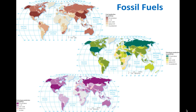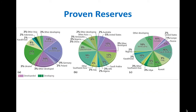Here are our fossil fuels and you can see their use around the globe. A few countries obviously stand out: the United States, Russia, Canada, and China are among the higher ones. Here are the proven reserves — the ones we know are there and can access — and we can look at the differences between developed and developing nations. A lot of the proven reserves are being used by the developed nations.